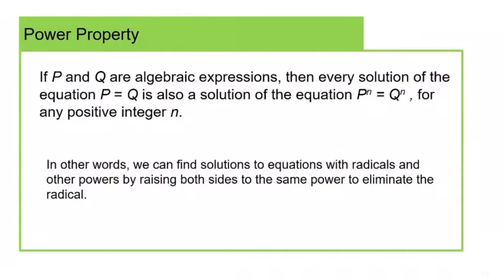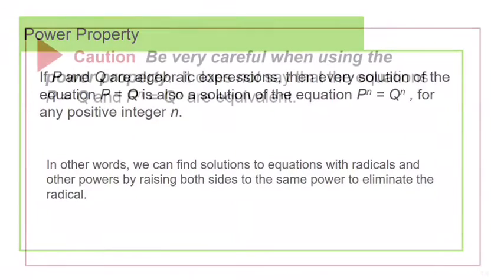Now we're getting ready to solve radical equations and also rational exponent equations, and we're going to use this property called the power property. It says if P and Q are algebraic expressions, then every solution of the equation P equals Q is also a solution of P to the N equals Q to the N for any positive integer N. In other words, we can find solutions by raising both sides to the same power to eliminate the radical.